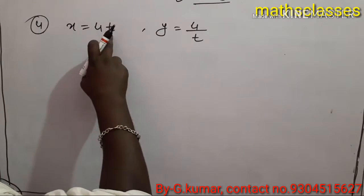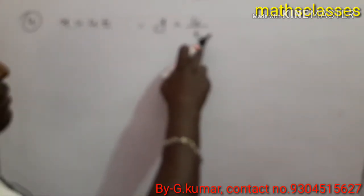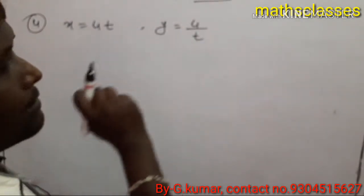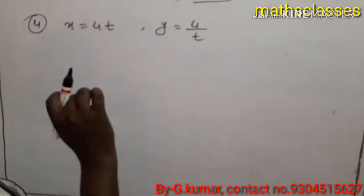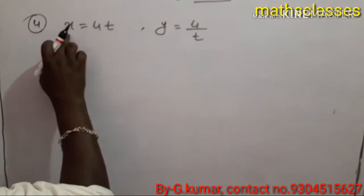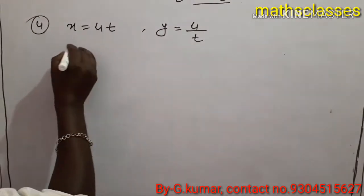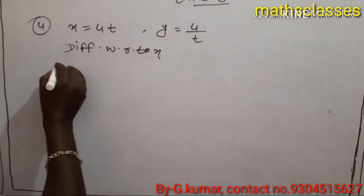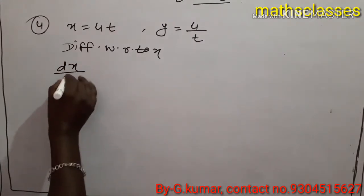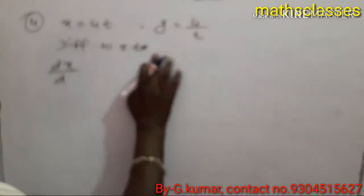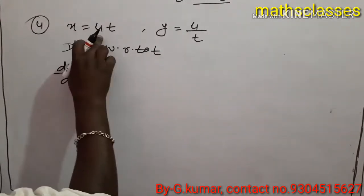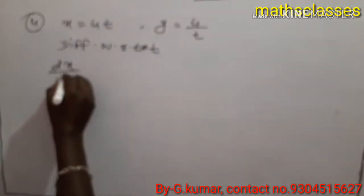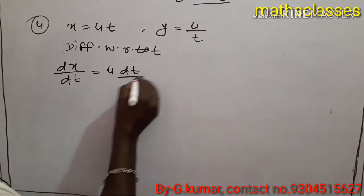Here, X depends on T and Y also depends on T, so X and Y also depend on each other. Such functions are called parametric functions. We need to find dy/dx. Since X is a function of T, we differentiate with respect to T. So DX upon DT equal to 4, since DT upon DT is 1.